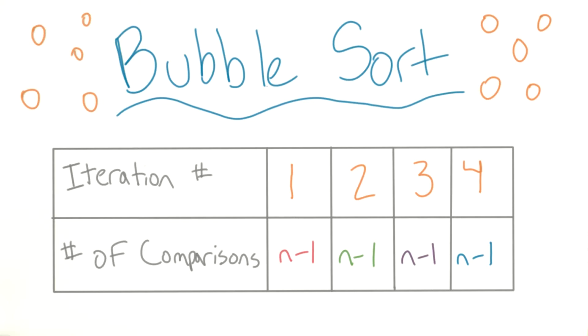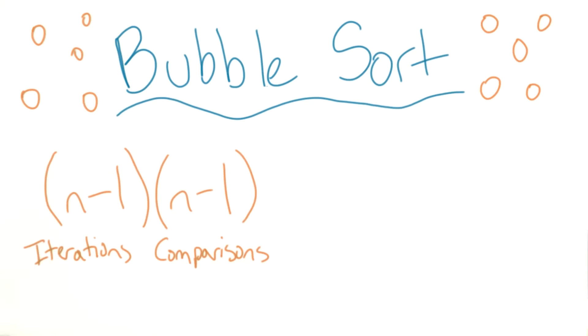So n minus 1 comparisons for n minus 1 iterations gives us something like this. We can use a little algebra to figure out what this simplifies to. And we get something that looks like this.